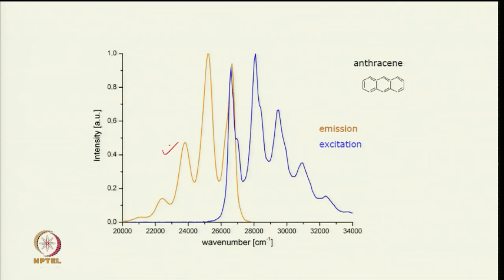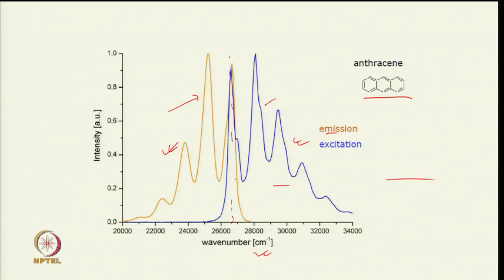This mirror image relationship arises from two facts: the fluorophore can return to any ground state vibrational level, and the gap between vibrational levels in S0 is the same as in S1. There are two other important parameters — fluorescence lifetime and quantum yield. Lifetime is the average time the molecule spends in the excited state prior to returning to the ground state, inversely proportional to the total decay rate.